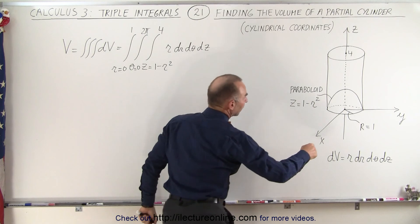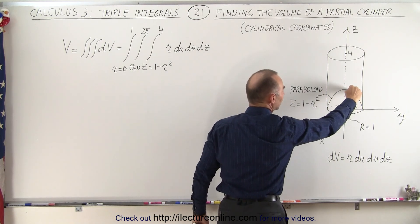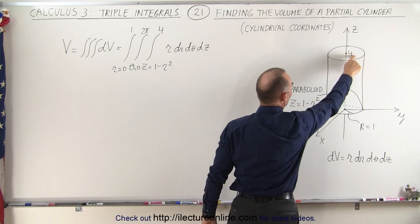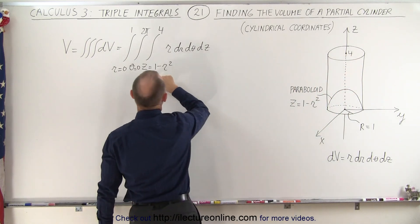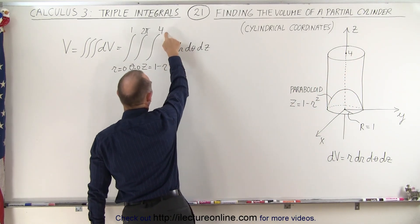In the z direction, we're going to integrate from the top of the paraboloid to the top of the cylinder. So that would be from 1 minus r squared to 4 for the value of z.